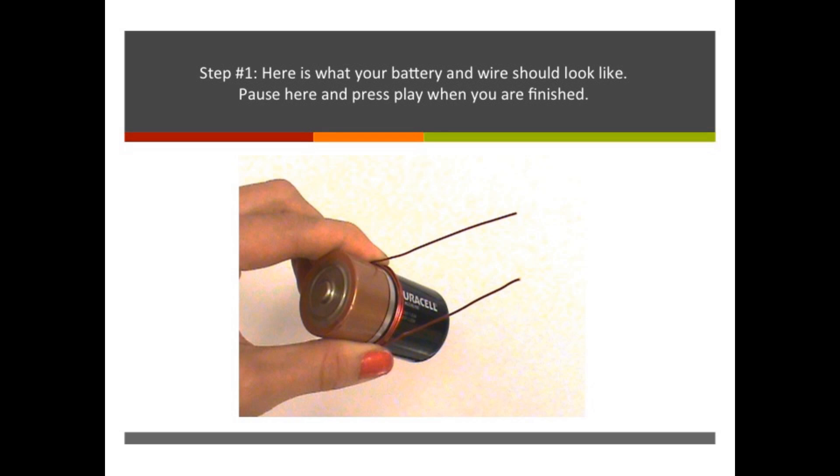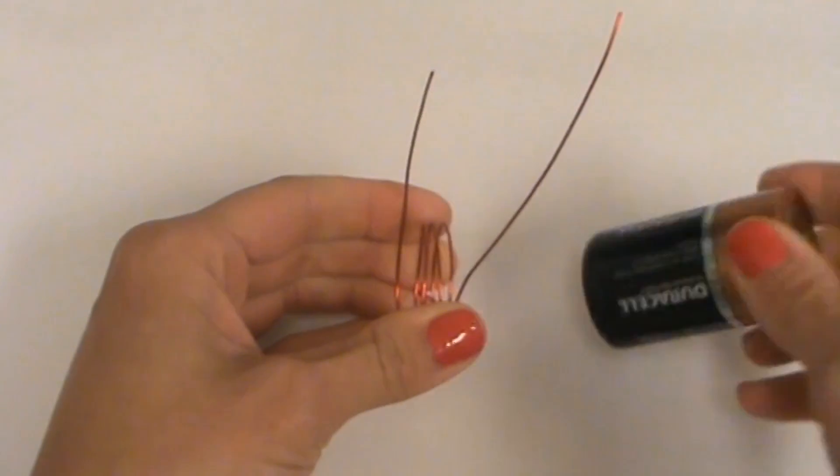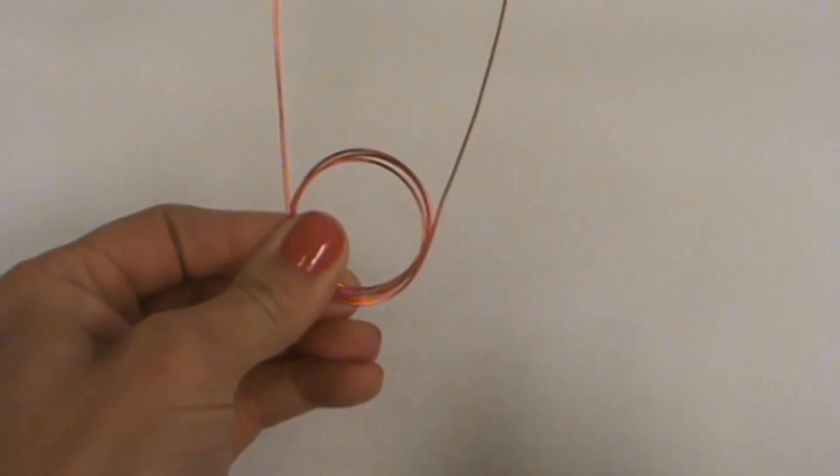Here's what your battery and coil wire should look like now. Now gently pull the wire loop off of the battery as shown.